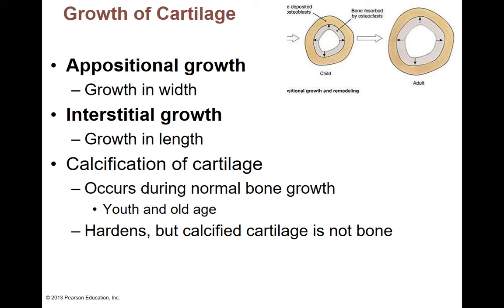Cartilage growth happens in two ways. Appositional growth is when cartilage grows wider. Interstitial growth is when cartilage grows longer. As a fetus is growing, cartilage has to grow both wider and longer. Cartilage can also calcify — calcium can be added to harden it. This happens during normal bone growth, both when you're young and when you're old. Calcified cartilage is not bone — it's just cartilage with calcium, so it's harder but doesn't have the tree-ring-looking shapes of bone.